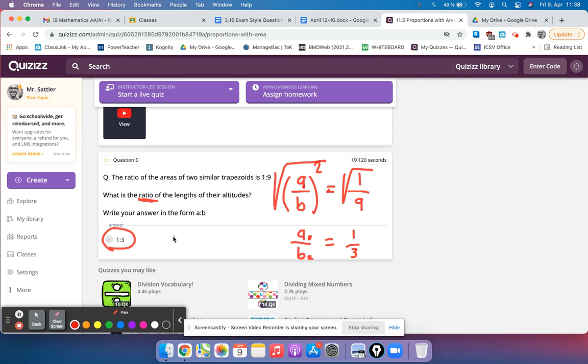So I said write your answer in the form A to B with the colon, so just write 1 to 3 like that.